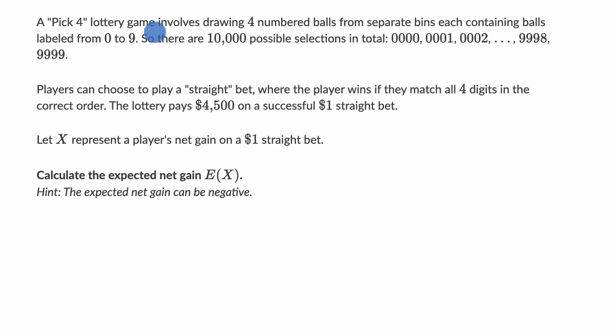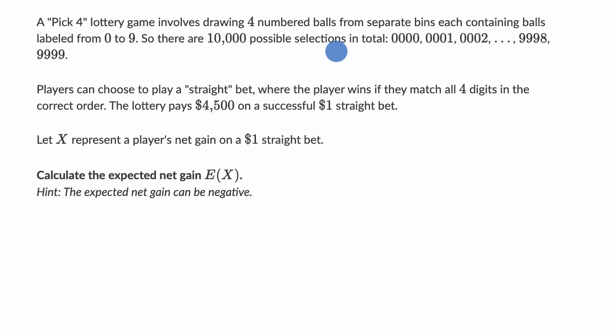We're told a Pick 4 lottery game involves drawing four numbered balls from separate bins, each containing balls labeled from 0 to 9. So there are 10,000 possible selections in total.